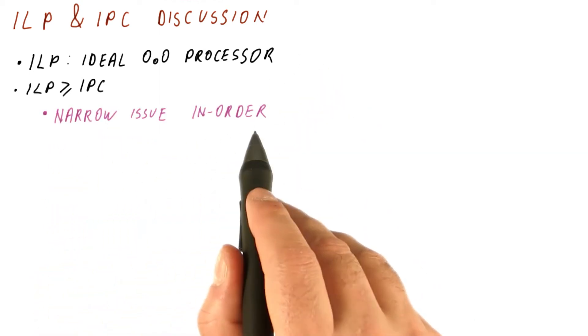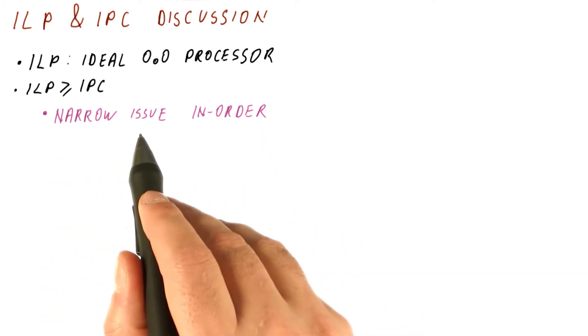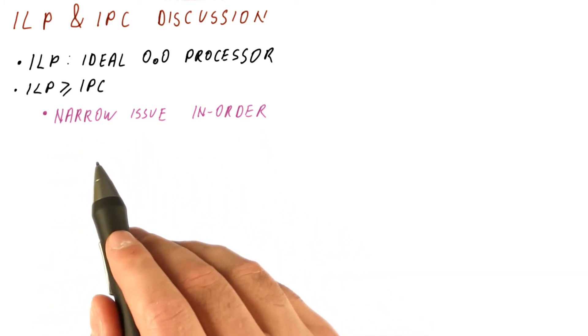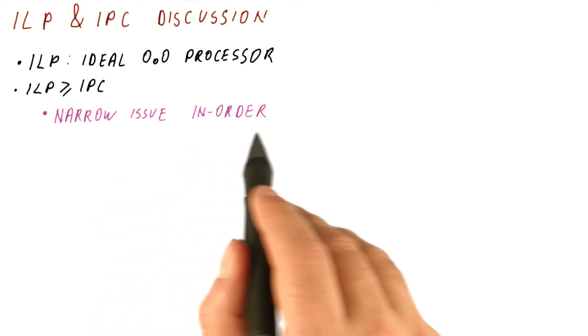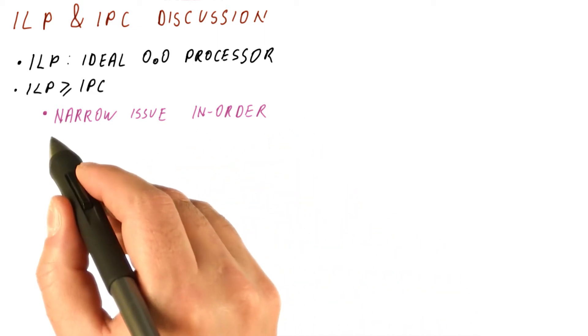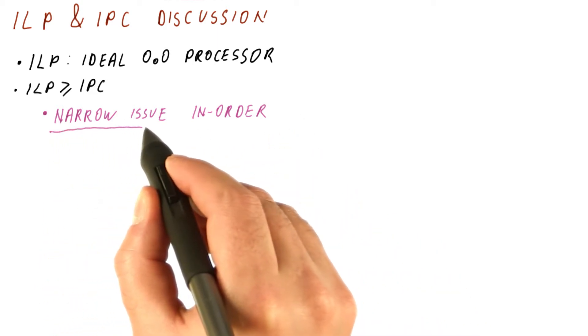So if we consider a narrow-issue in-order processor, narrow issue meaning that it can only issue about maybe one, two, maybe three instructions per cycle, and it's in-order, usually the limitation for the IPC will be this.